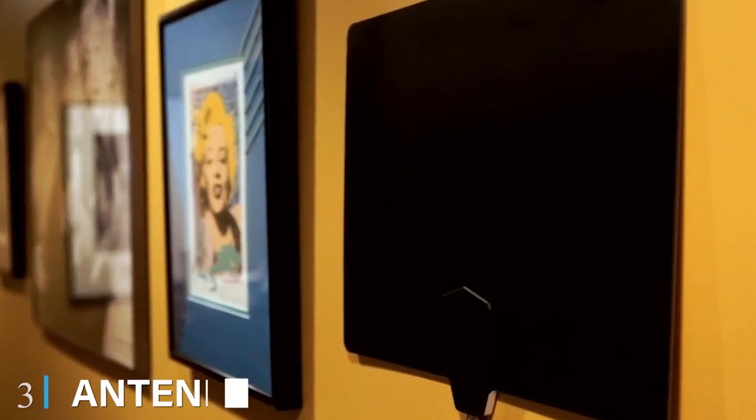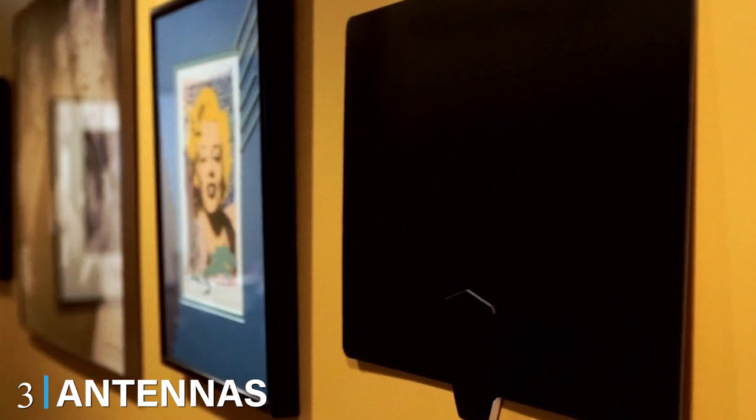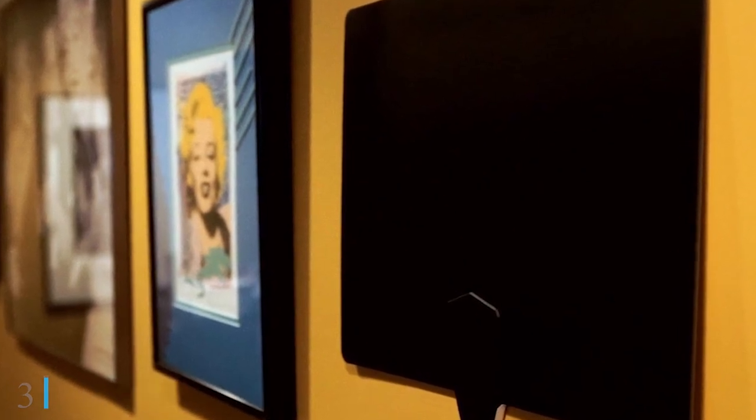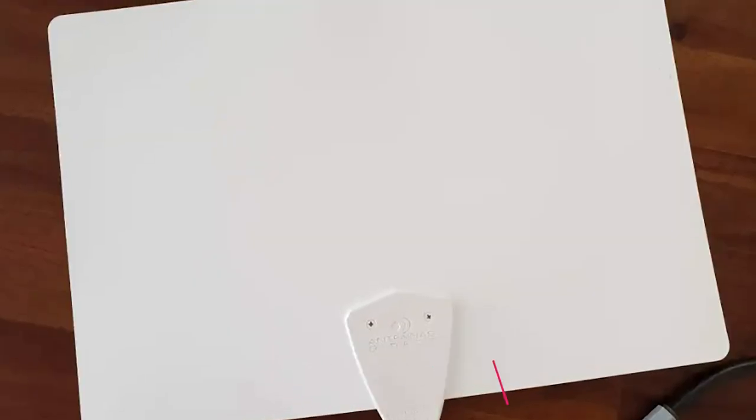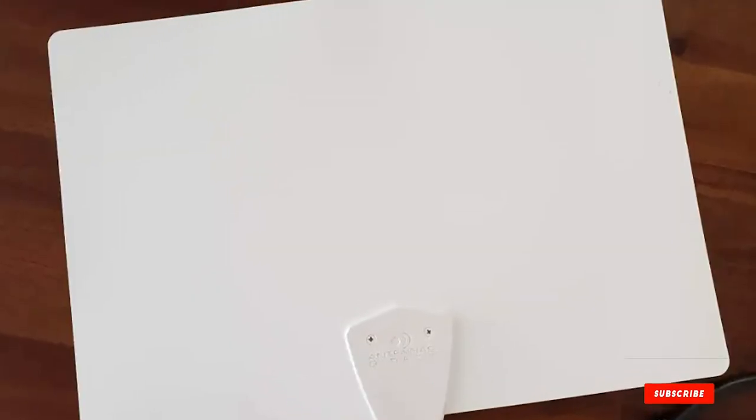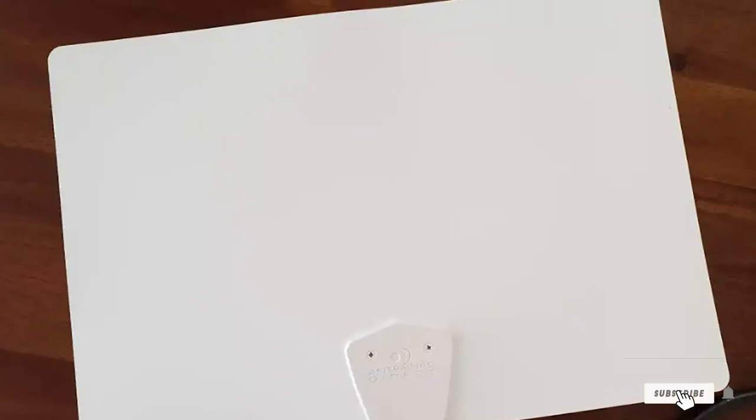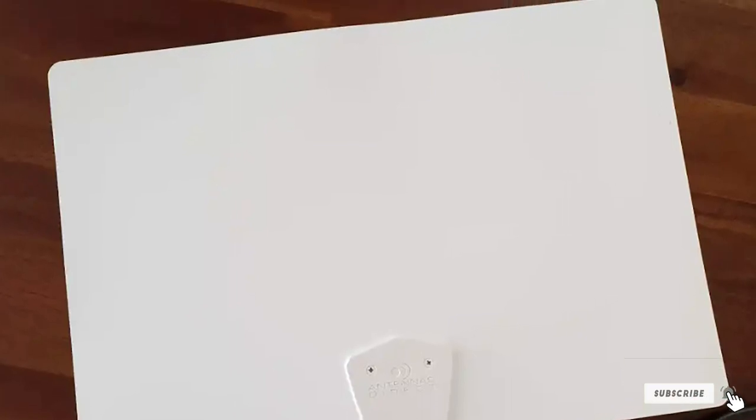The number three position is held by Antennas Direct ClearStream Flex Amplified TV Antenna. The ClearStream Flex is pricier than the ClearStream Eclipse and larger. Thanks to its bigger size and included amplifier, this indoor antenna sports a much longer 50-plus mile range than the Eclipse.